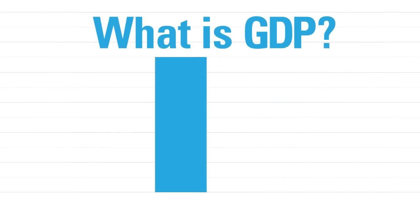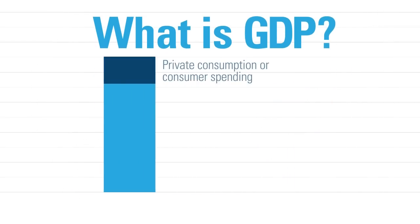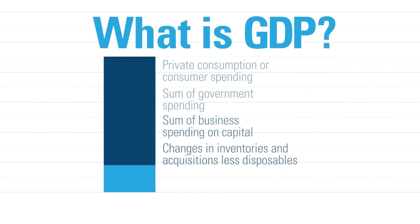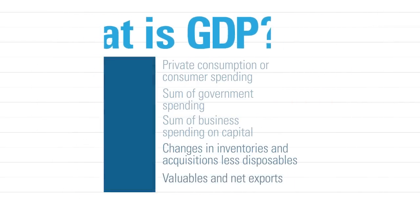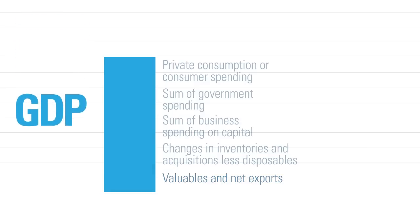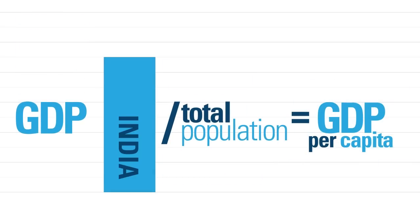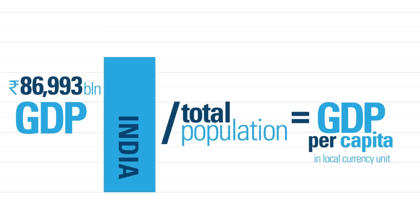Gross Domestic Product, GDP, is the monetary value of all finished goods and services produced within a country. To compare the standard of living across different countries, GDP per capita is more useful. It's calculated by dividing the GDP of a country by its population.